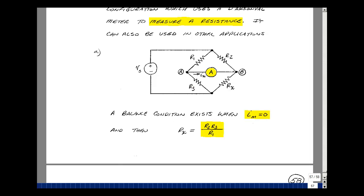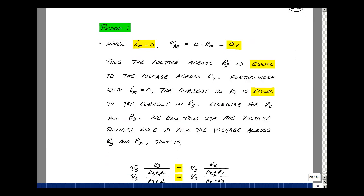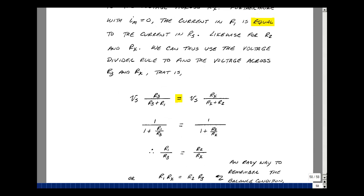Now why would that be true? Let's look at the condition of zero current. The current here is zero, and the current in R1 is the same as R3. Likewise, the current in R2 is the same as R sub x. With no current in the meter, there's also no voltage across the meter. So the voltage across R3 is the same as the voltage across R sub x.